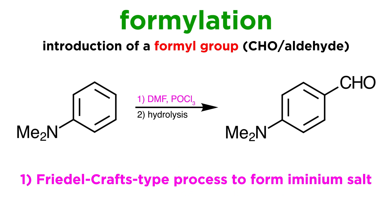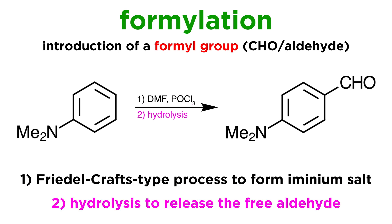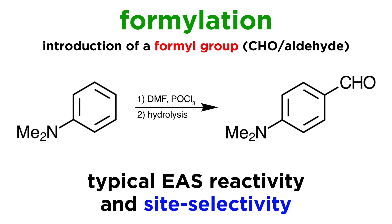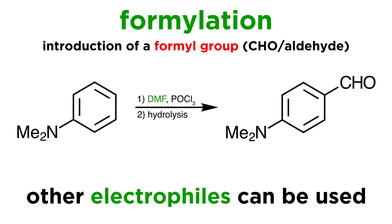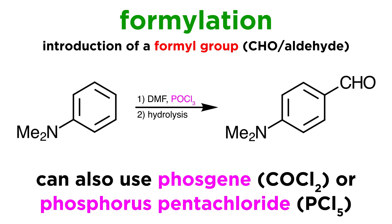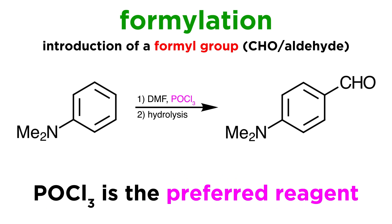The reaction consists essentially of a Friedel-Crafts type process to form an iminium salt, followed by hydrolysis to release the free aldehyde, and we will get a closer look at this mechanism in a moment. The reaction follows the typical reactivity and site selectivity of any electrophilic aromatic substitution, so in this case para-site selectivity is observed. Other reagents can also be used in place of DMF, and other activators can be used as well, like phosgene or phosphorus pentachloride, but liquid phosphorus oxychloride is convenient to use and is the preferred reagent.